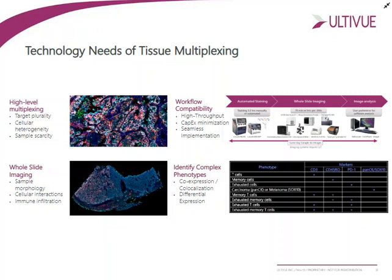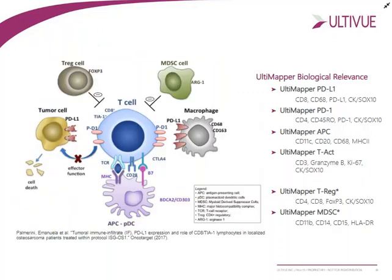I'd like to describe some of the content that AltaVue provides. If you think of the interactions in immuno-oncology centered around a T cell — in this instance, a cytotoxic T cell — the cytotoxic T cell interacts with a number of cells within the tumor microenvironment, particularly tumor cells, regulatory T cells, myeloid-derived suppressor cells, macrophages, and other antigen-presenting cells, in this case dendritic cells.